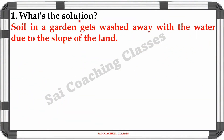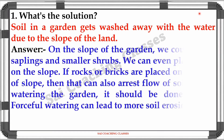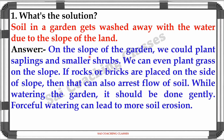First question - What's the solution? Question: Soil in a garden gets washed away with the water due to the slope of the land. Answer: On the slope of the garden, we could plant saplings and small shrubs. We can even plant grass on the slope. Props or bricks placed on the side of the slope can also arrest the flow of soil. While watering the garden, it should be done gently, as forceful watering can lead to more soil erosion.